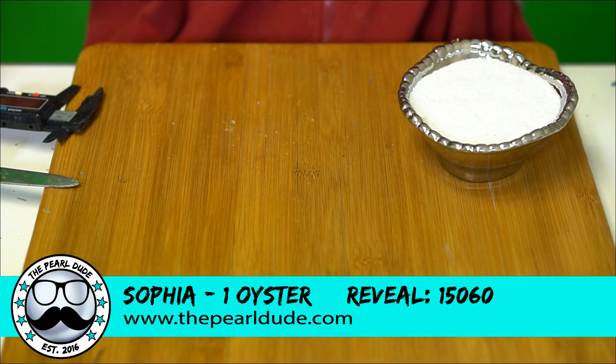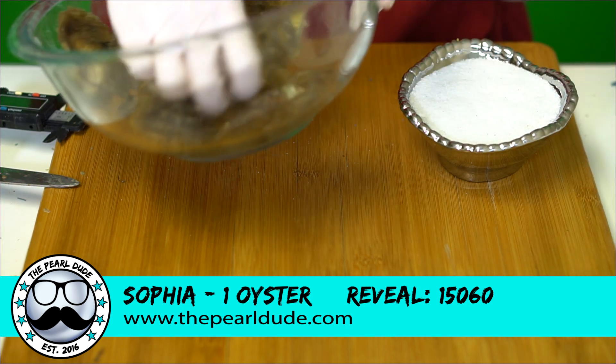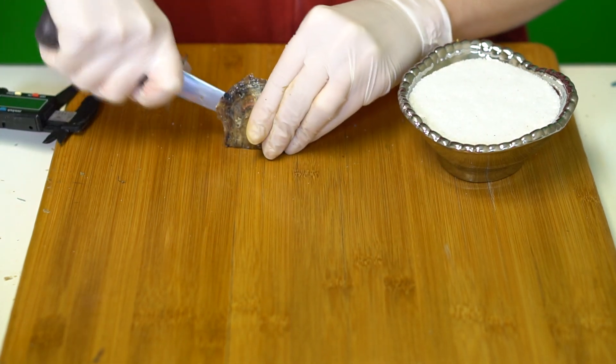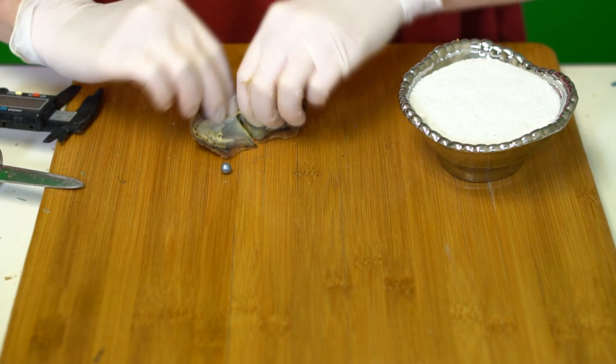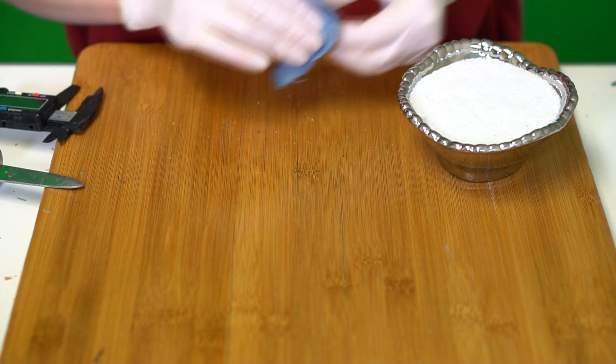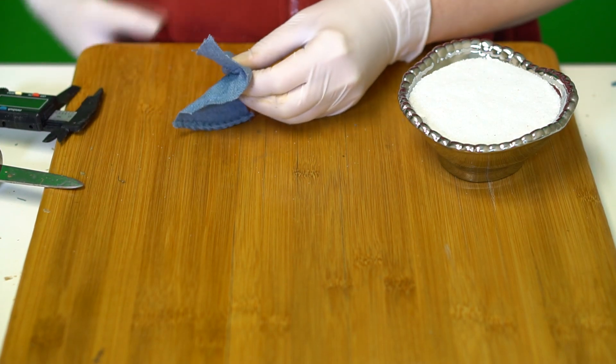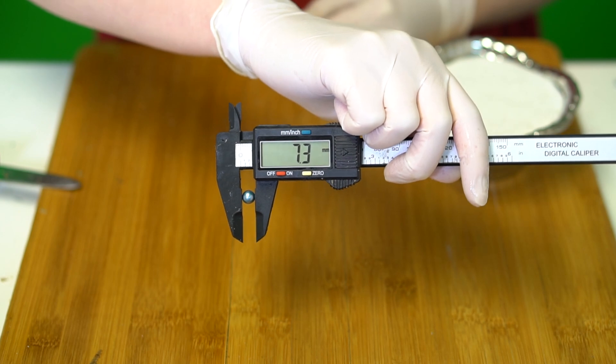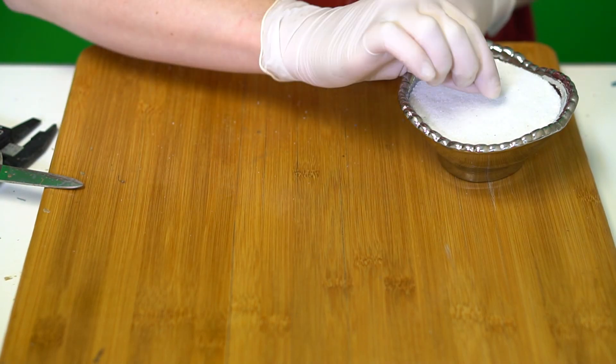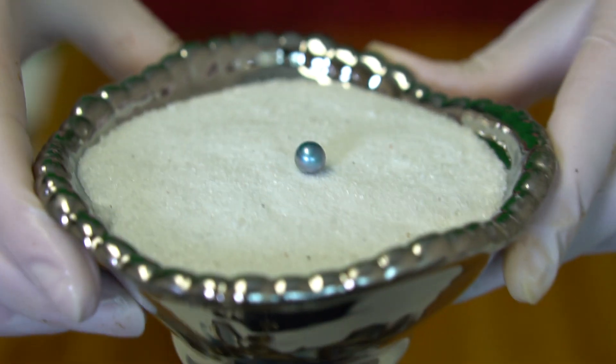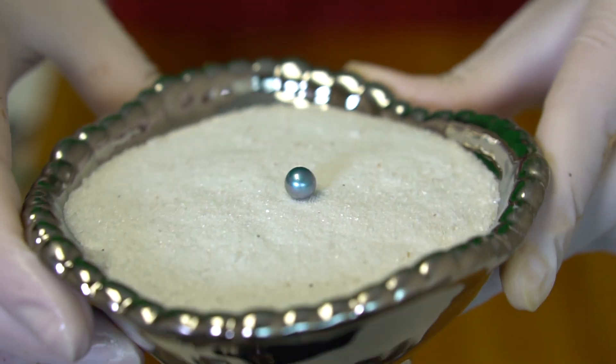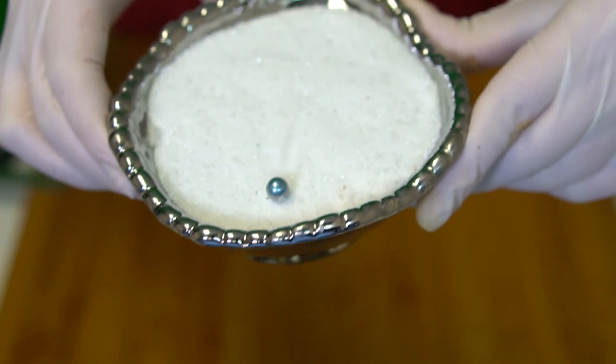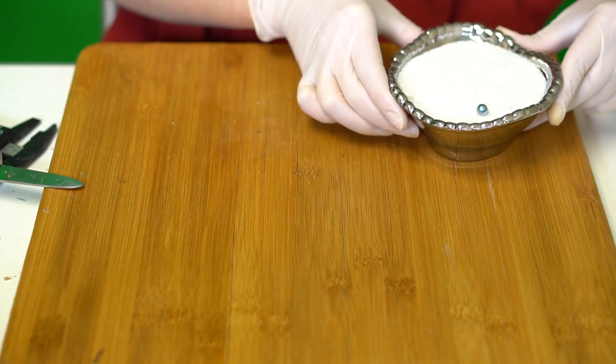Next reveal is for Sophia, reveal 60. We are opening one oyster. Ooh, how beautiful. It's a light blue. It's got a really pretty shine to it, 7.3. Congratulations, Sophia. Rolling away. Beautiful color.